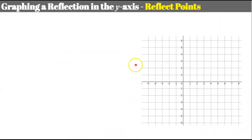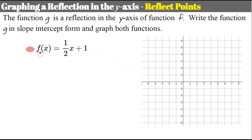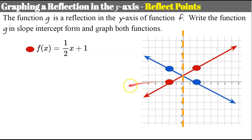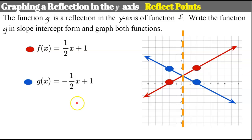Now reflecting points over the y-axis. Graph function f in red: y-intercept of 1, rise 1, run 2. Select a point on f that is 2 units from the y-axis and reflect it to 2 units on the other side. Pick another point at (negative 2, 0), also 2 away, and reflect it to 2 units on the opposite side. Graph the line: function g has y-intercept of 1 and slope of negative 1/2. Three ways to graph a reflection in the y-axis.